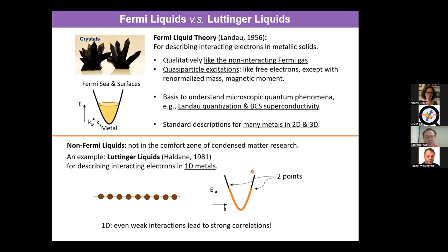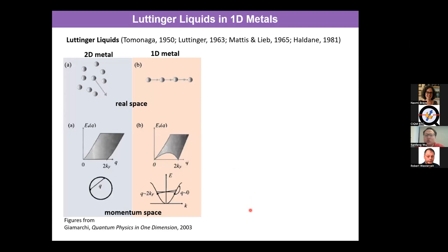Luttinger liquid was first coined by Duncan Haldane in 1981. The key part is to have a metal where electrons only move in one dimension — 1D metals. In that case, it's very special in terms of the band structure and Fermi surface, which has only two points in this simple case. In such one-dimensional metals, it has been realized that even weak interactions can lead to very strong electron correlations, and that's the key to driving the system to deviate from Fermi liquid behavior, instead behaving like a Luttinger liquid.